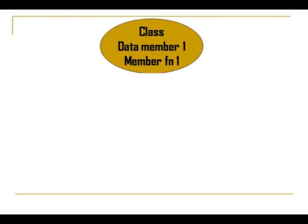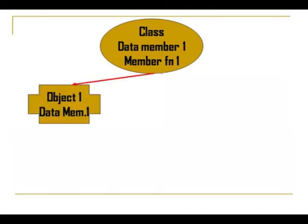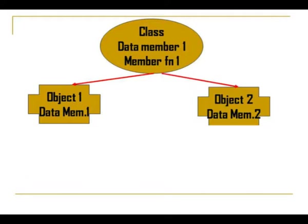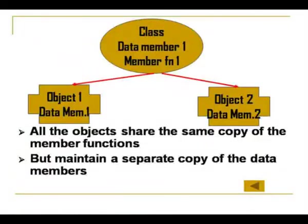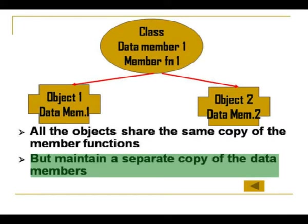In a class, you have data members and member functions. Each object created for the class will also have control over those data members and member functions. The difference is that all objects have the same copy of the member function, so any modification done to the member function of a class is visible and accessible to all objects. But for data members, each object has a separate copy of those data members — that is the significant point to note.